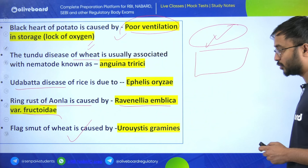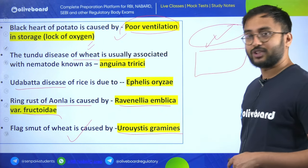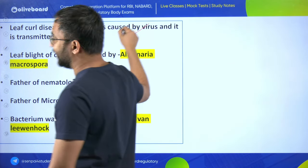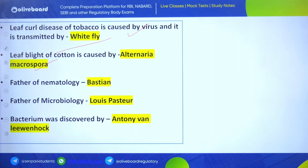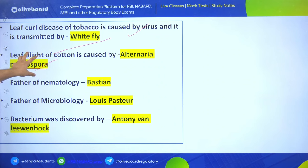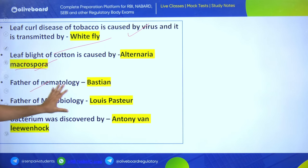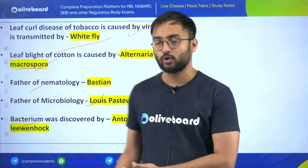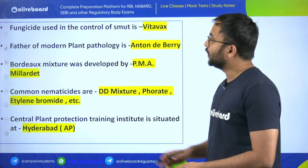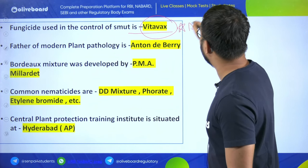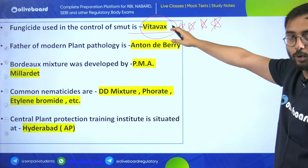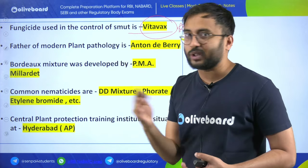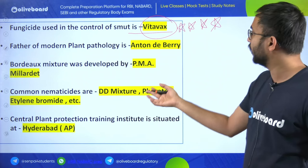Flax smut of wheat is caused by Ustilago craminis. Leaf curl of tobacco is caused by virus and transmitted by whitefly. Leaf blight of cotton is caused by Alternaria macrospora. Father of nematology is Bastian. Father of microbiology is Louis Pasteur. Bacteria was discovered by Anton van Leeuwenhoek. Fungicide used to control smut is Vitavax - very important, asked in AFO and ADO exams.